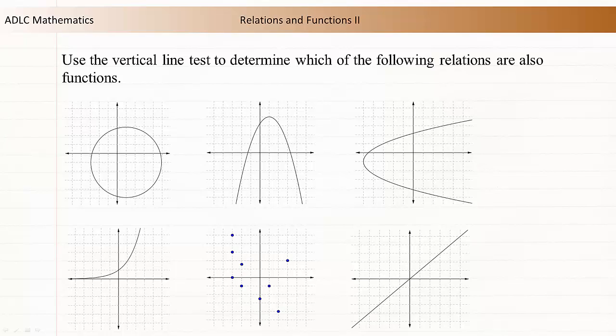Functions do not have to be linear. A vertical line test for graphs can be used to determine which relations are functions when the graph is given.